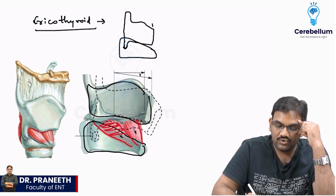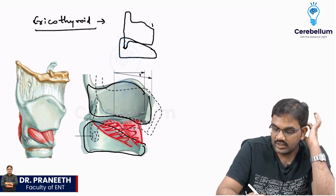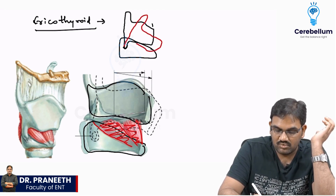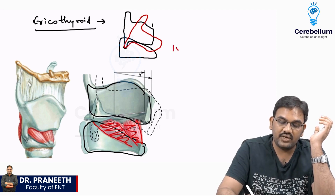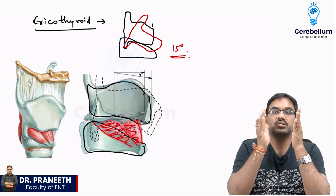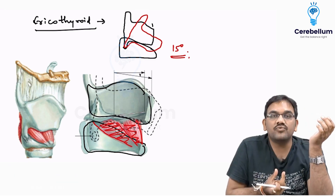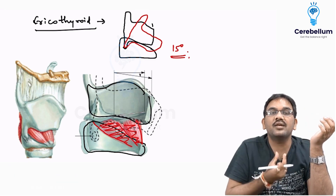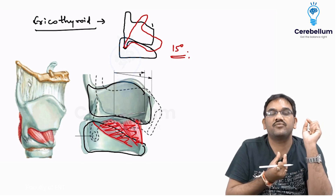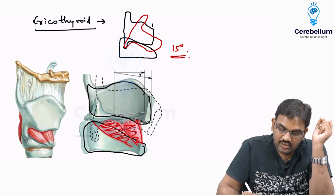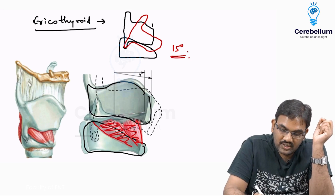Whenever this cricothyroid contracts, your thyroid will move forward - just 15 degrees of movement is possible. The thyroid will move anteriorly and inferiorly 15 degrees.